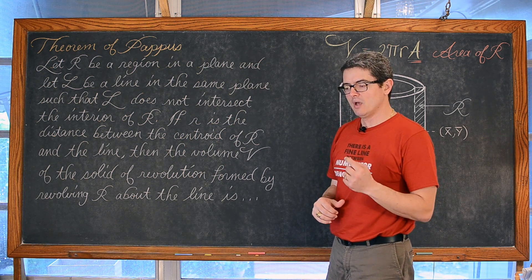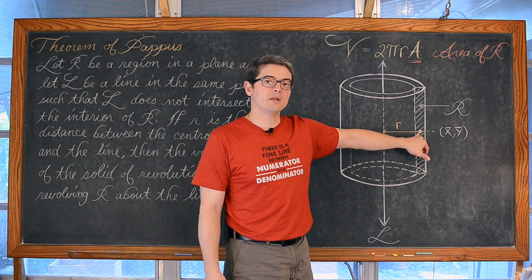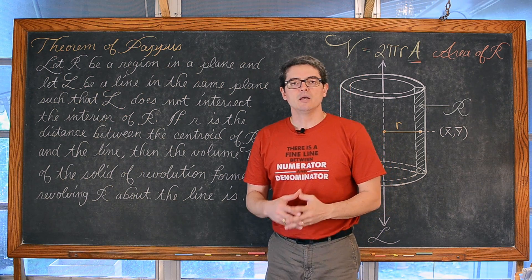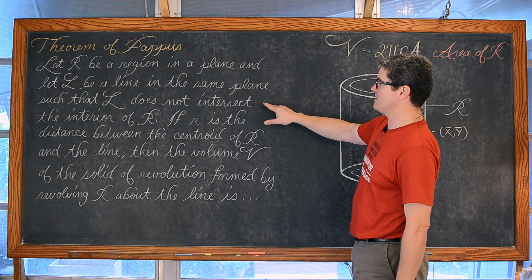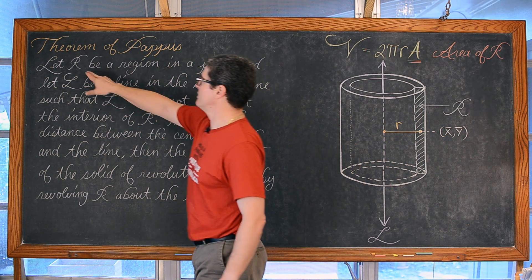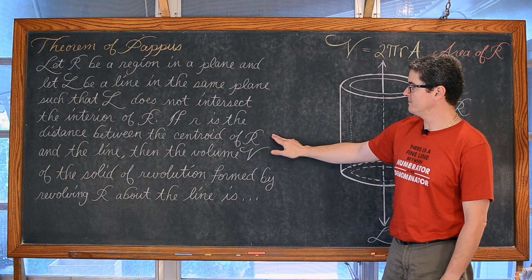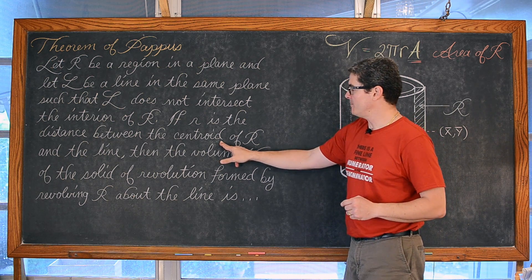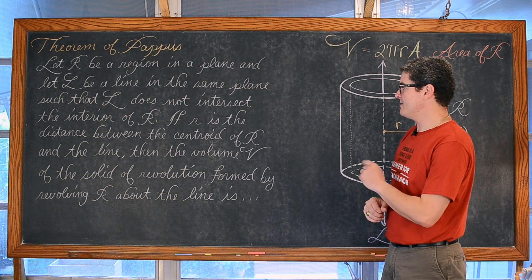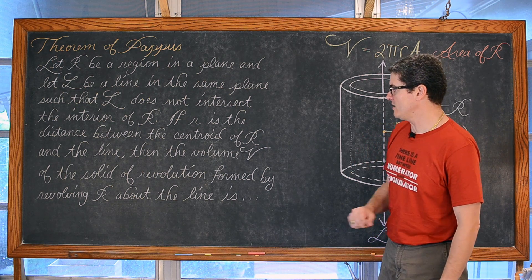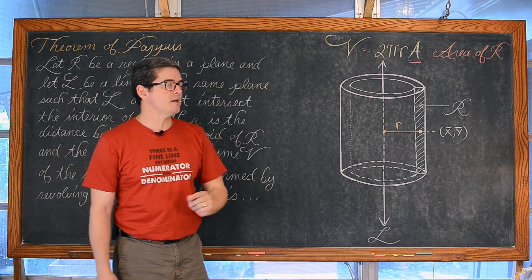Using the theorem of Pappus will be an option when you find it either required or relatively easy to find the centroid of a plane region. So if you can find that center of mass in a plane region, then this is an option you can use. Let R be a region in a plane and let L be a line in the same plane such that line L does not intersect the interior of R. If lowercase r is the distance between the centroid — the center of mass for a planar lamina or thin plate of capital R — and the line, then the volume V of the solid of revolution formed by revolving R about this line is equal to 2πr times capital A, which is the area of our region.